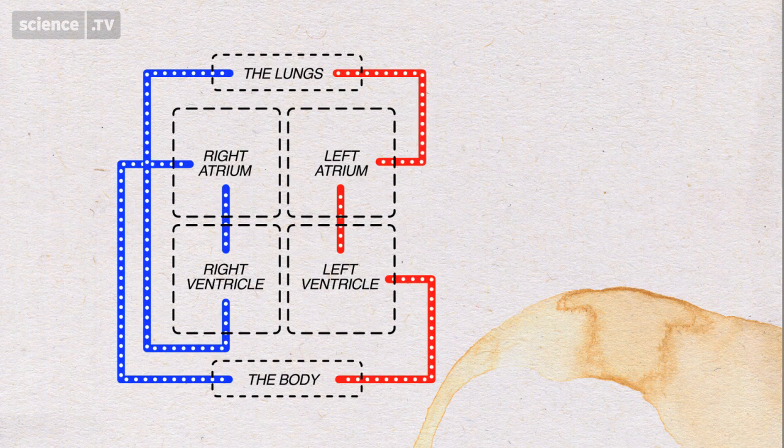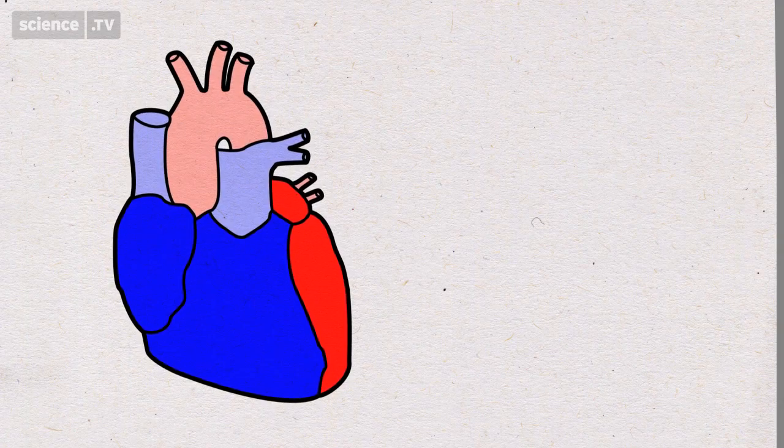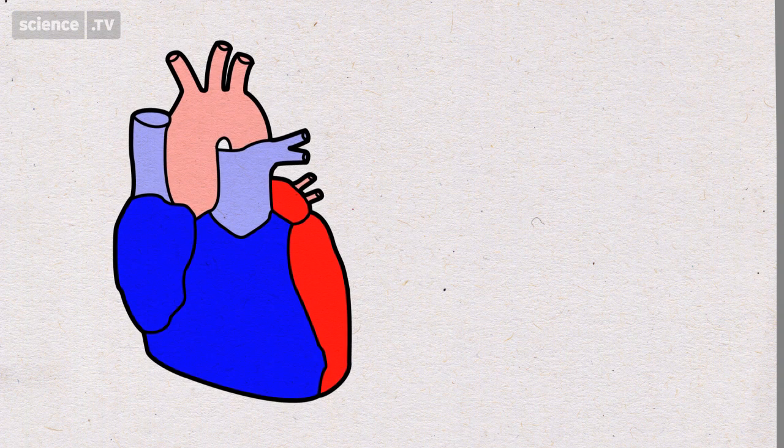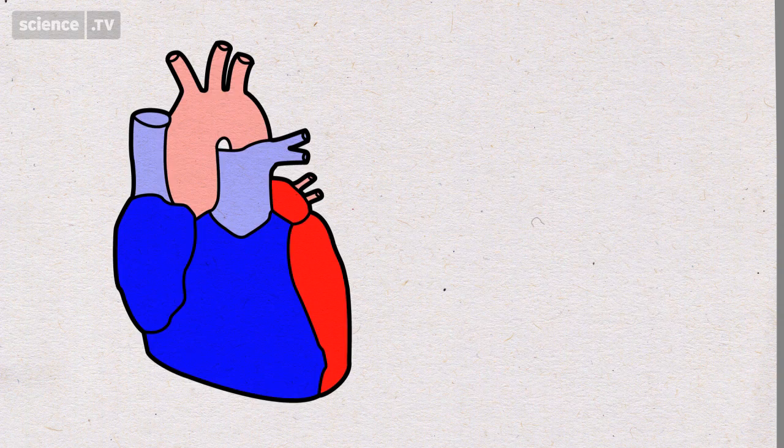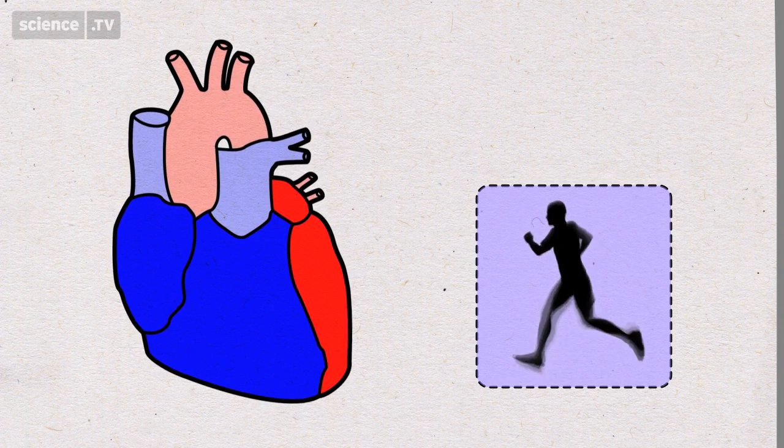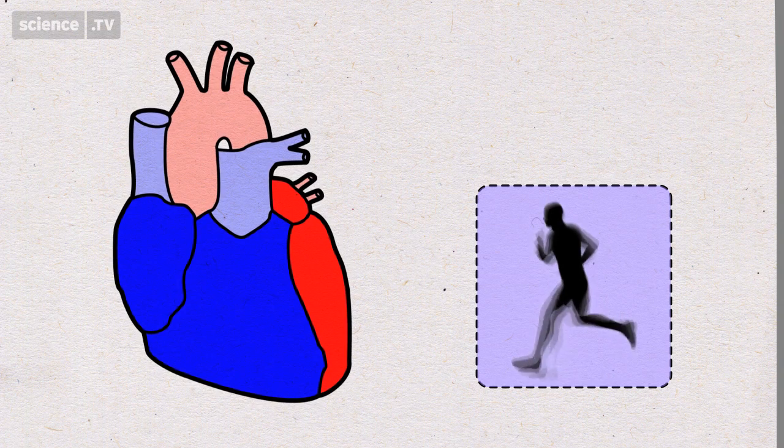Now let's see what the heart actually looks like. Looks like bagpipes, doesn't it? But just think of it as a big muscle, the muscle you need to exercise so all your other muscles get oxygen.